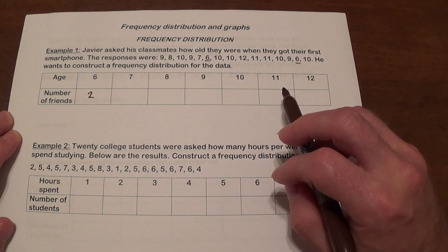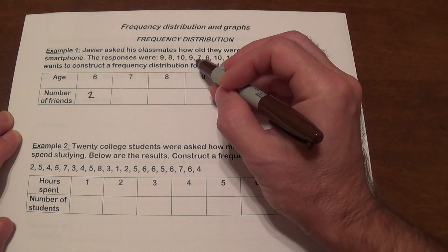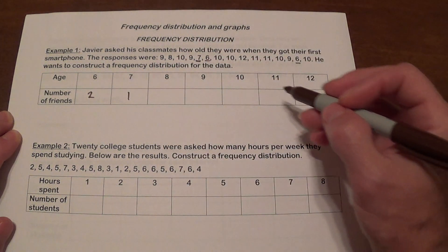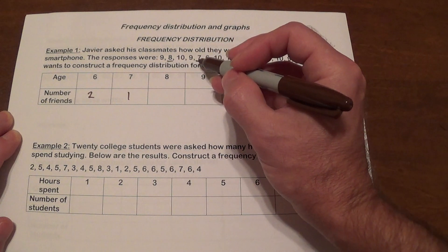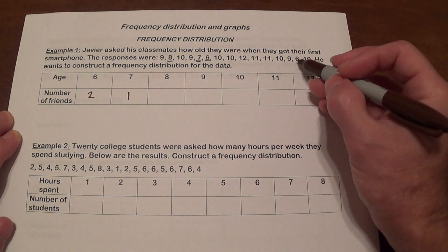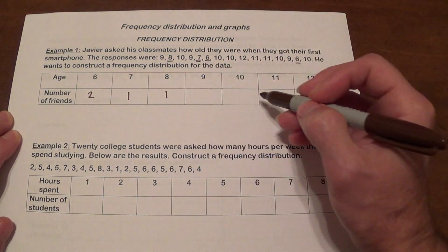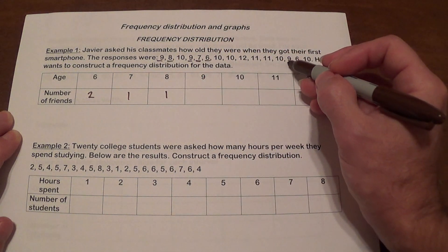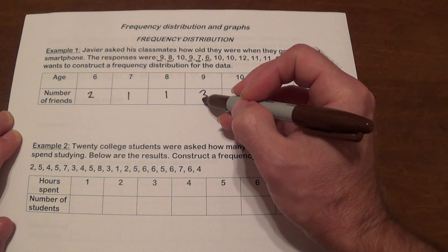How many got them when they were seven? There's one. And that's it. Eight. There's one. Nine. There's one. Here's two. Here is three. So we've got three.